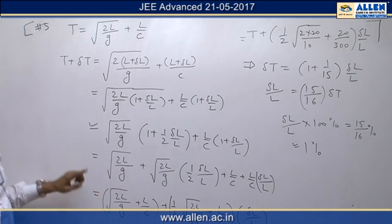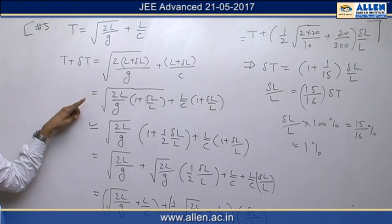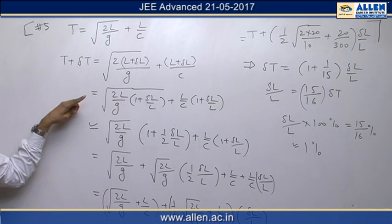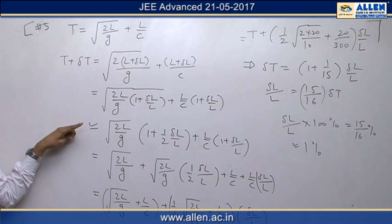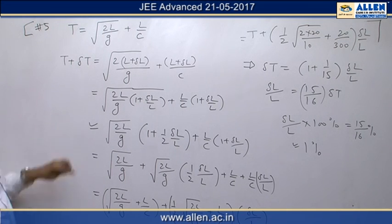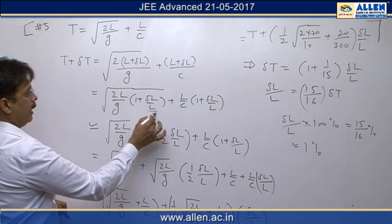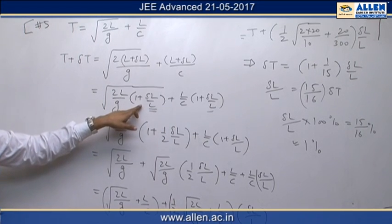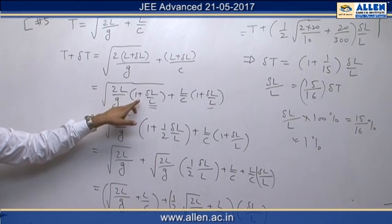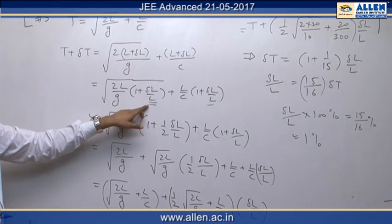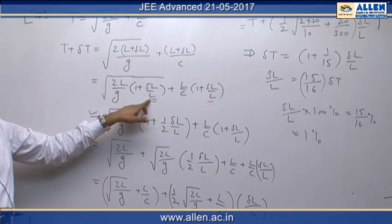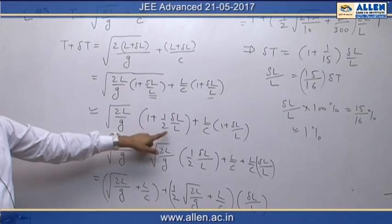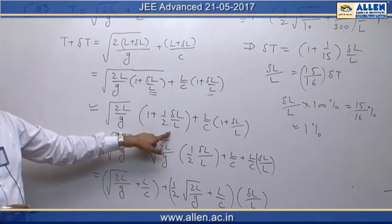Now we are using binomial approximation since it has been given that errors are small, so 1 plus delta l by l to power 1 by 2 becomes this value after binomial approximation.